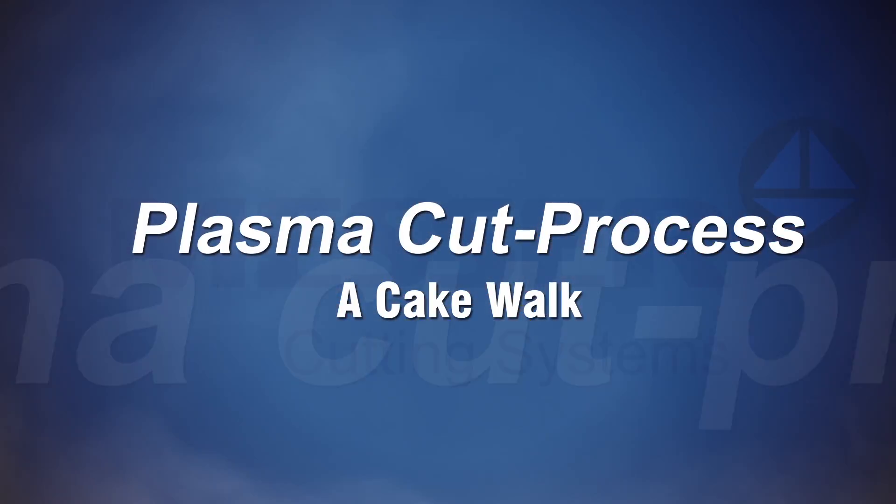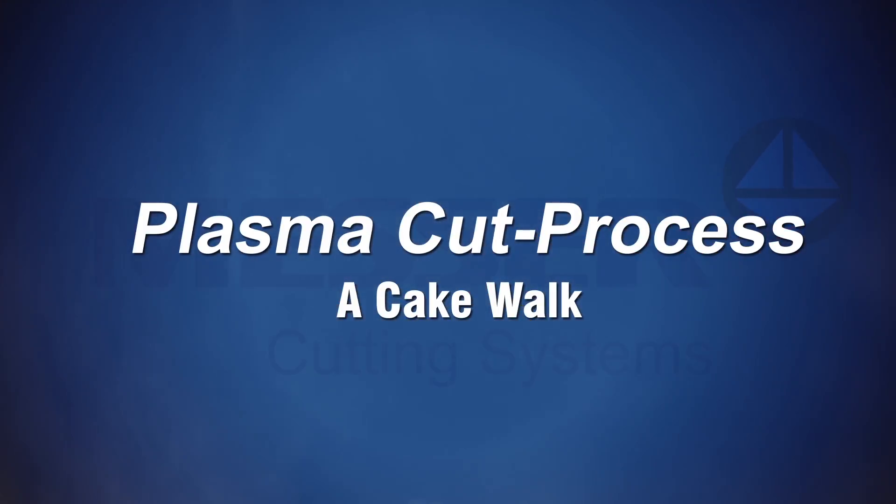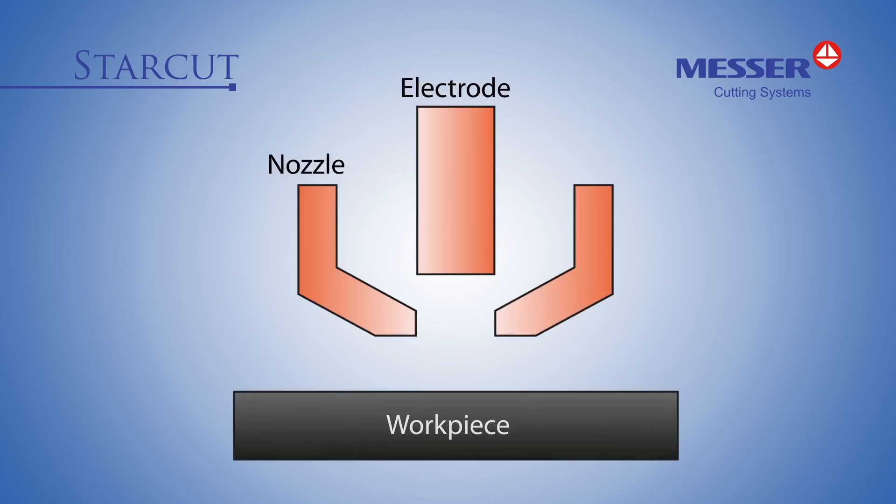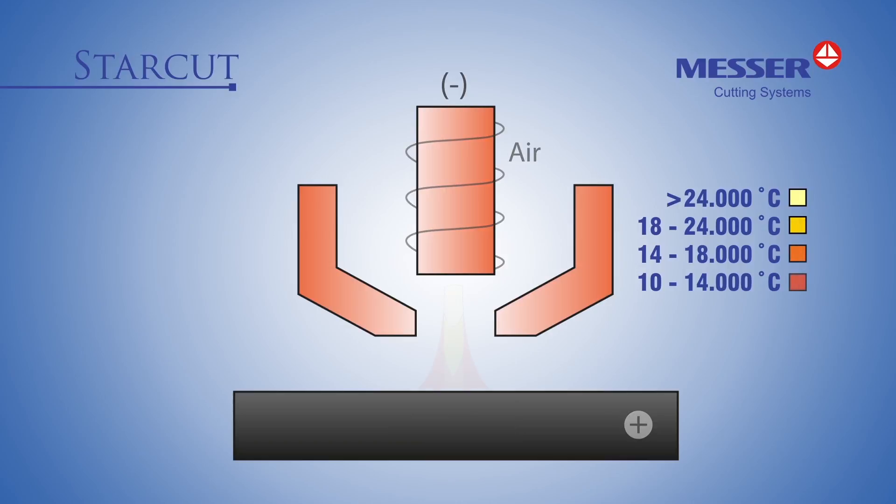Plasma Cut Process, a cakewalk. In a plasma torch, air is heated to an extremely high temperature by the introduction of electrical energy. This results in formation of conductive plasma, which can flow from the electrode inside the plasma torch to the workpiece. As a result, the workpiece melts and even partially vaporizes.